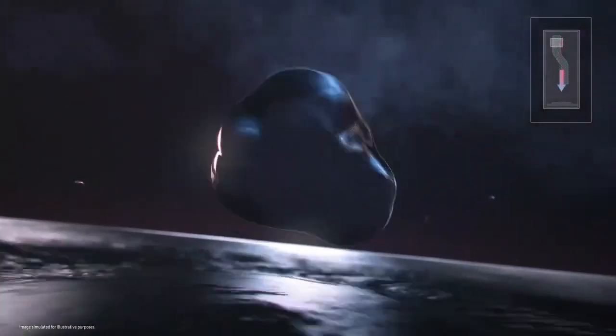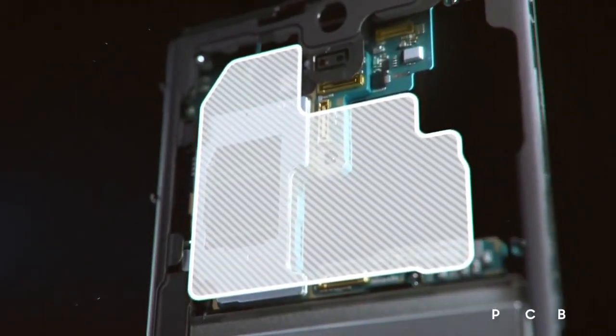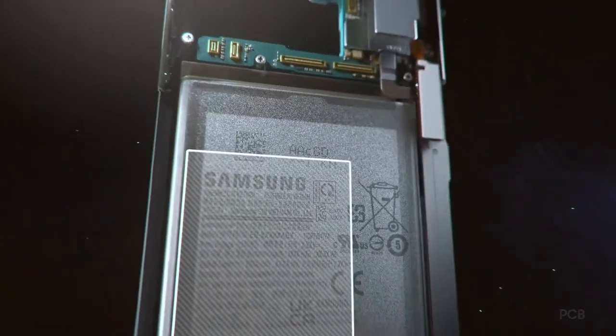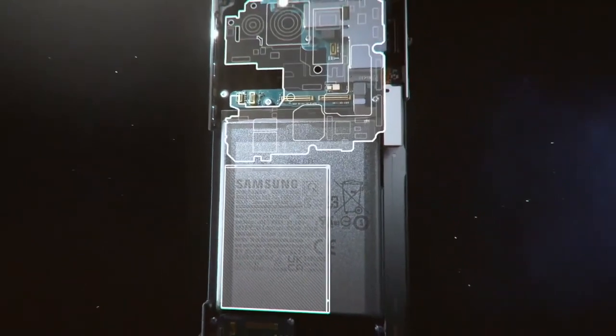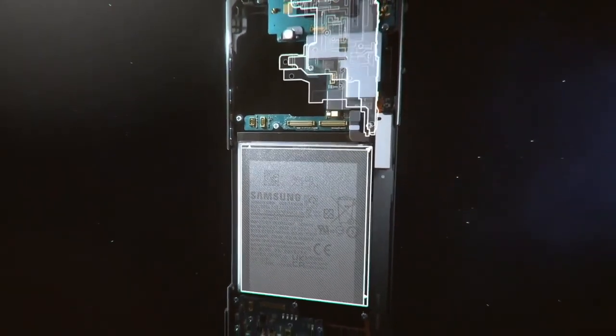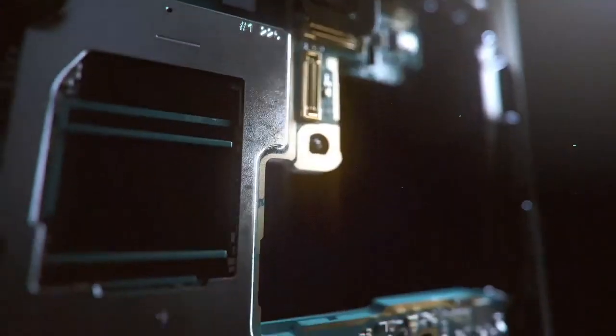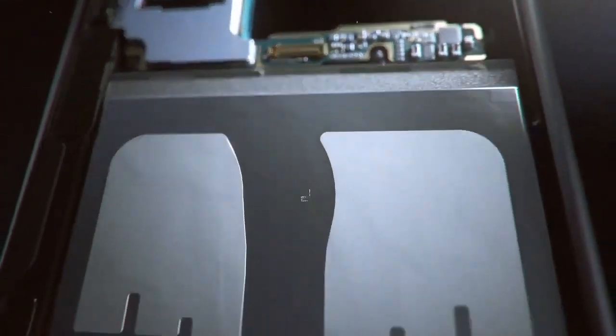The vapor chamber, or VC, acts as a powerful thermal spreader. In the past, the VC rested on the PCB. But as smartphone batteries became bigger, the PCB got smaller. So our engineers had to find a different location for the VC to maximize heat diffusion.